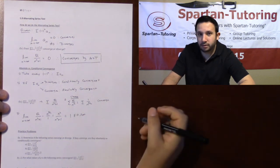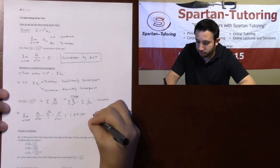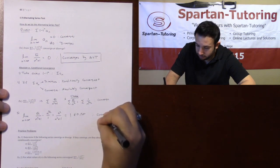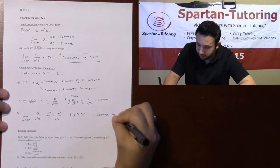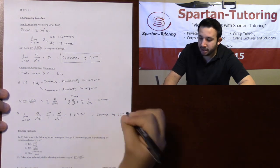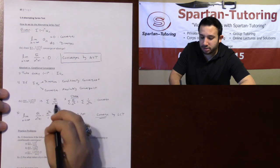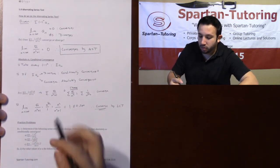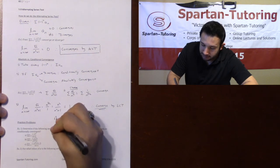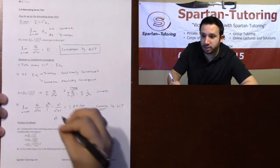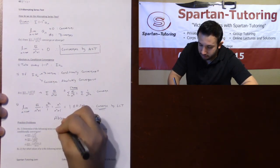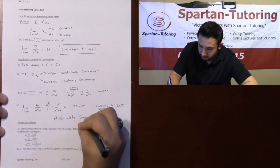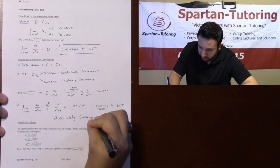Therefore this series converges by the limit comparison test. Because the series without the negative one to the n still converges, the overall alternating series is absolutely convergent.